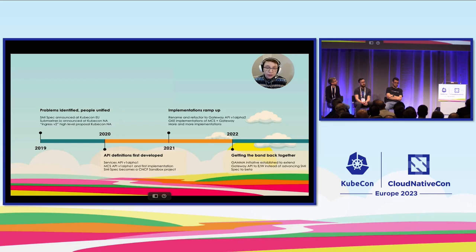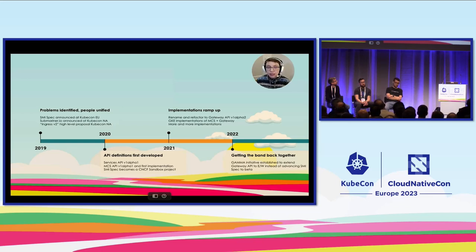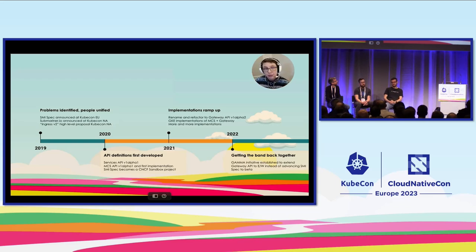A few of those projects connected on their own attempt to converge called the Service Mesh Interface or SMI spec. At the same time, SIG Multicluster and SIG Network respectively approached individual pieces of the problem in the form of the MCS and Gateway APIs. The MCS and Gateway APIs went through a very exploratory period in 2020, but have standardized a lot, especially in 2021, both in terms of API maturity level and the breadth of implementations. Then in 2022, the successor to the SMI spec — the Gamma Initiative — picked up the mantle to bridge the gap between the converging service meshes and these maturing Kubernetes-native API standards.